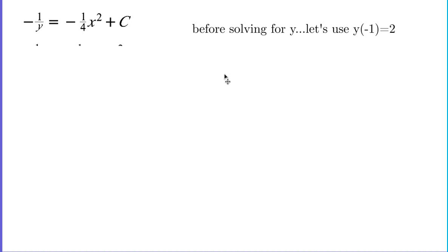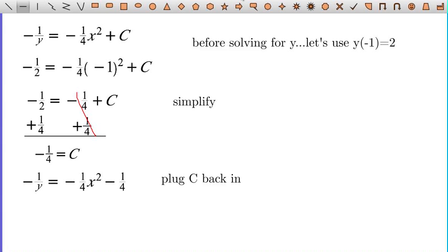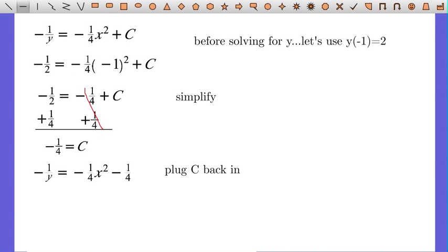Going ahead and plugging in negative one for x right here and two right there for y. Negative one squared is just going to be positive one. So that gives me that right there. I'm going to add one fourth to both sides to cancel out and get c all by itself. That gives me c equal to negative one fourth. So plugging that in gives me what's called a general solution. Sorry, a particular solution.